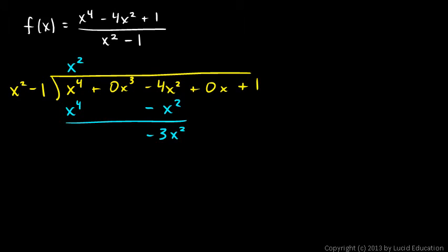Then I bring down this plus 1 over here. Now I look at these terms again: how many times does x squared go into this? That's pretty easy, it's minus 3. So I just put a minus 3 up here. Now I multiply this by that and write the result down here. Negative 3 times x squared is negative 3x squared, and negative 3 times negative 1 is positive 3. Then I subtract. That gives me nothing, and 1 minus 3 gives me a negative 2. I'm done.